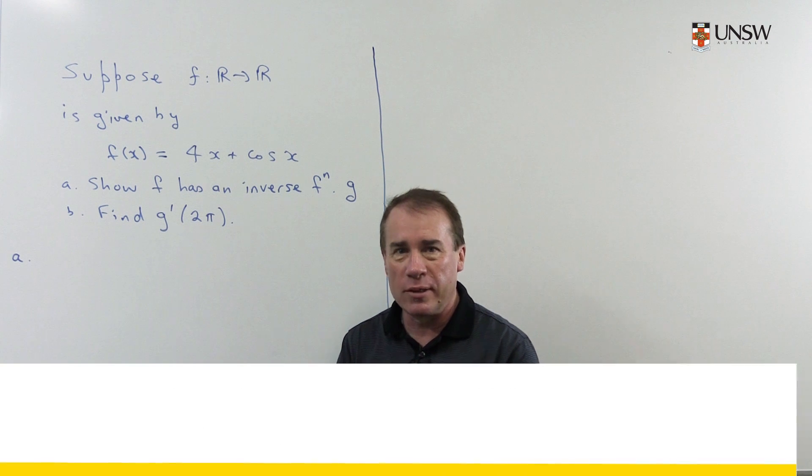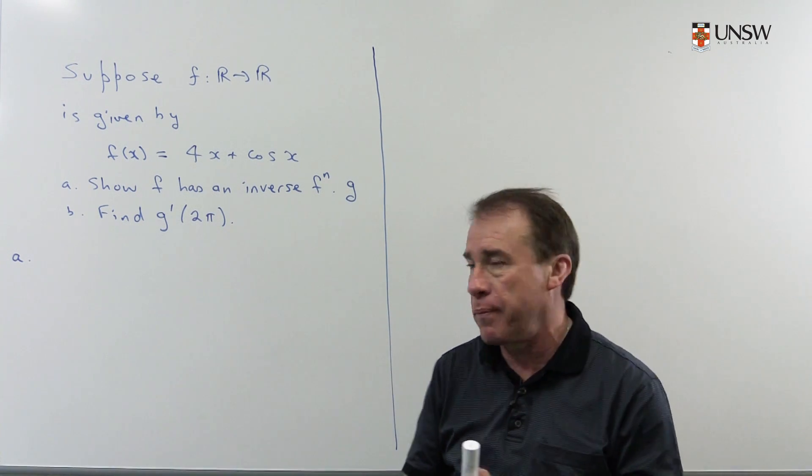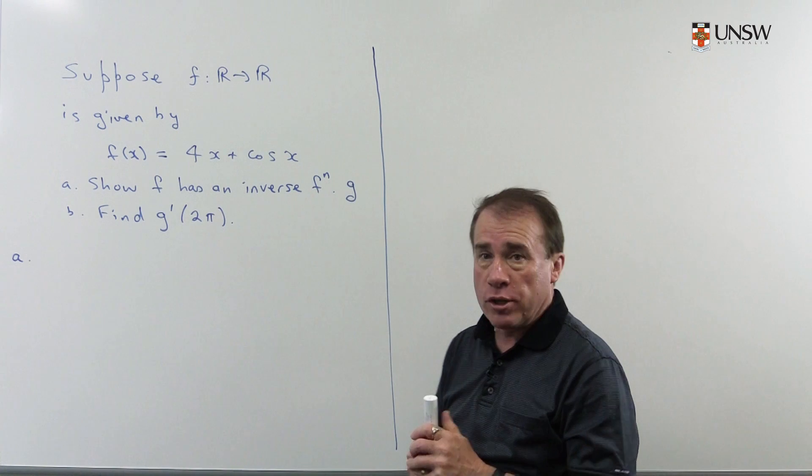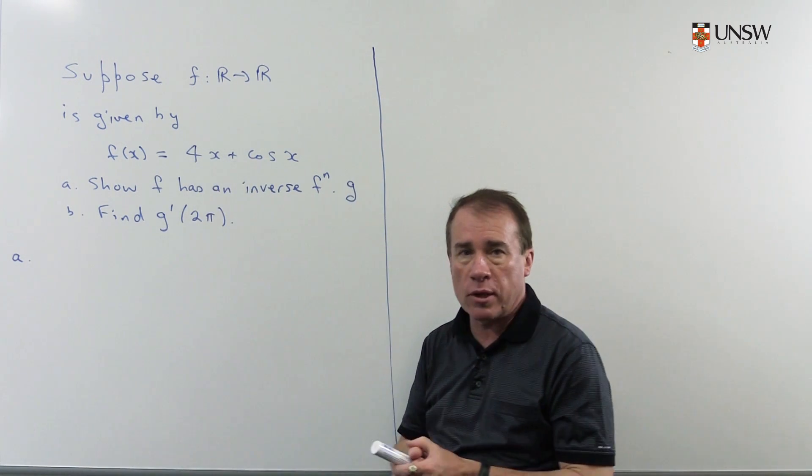Hello, we're going to have a look in this video at a problem involving inverse functions and the derivative of an inverse function. So we start off with a function f mapping R to R, and it's given by this formula: 4x plus cos(x).